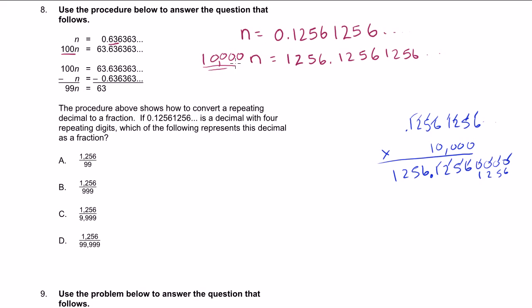So we say minus n, or you could say this is equal to minus 0.1256. And we are left with, on this side, what's 10,000 minus 1? Well, that's 9,999 is equal to, well, when you do the subtraction, this and this part are going to cancel out. The decimal parts cancel out, and you're just left with 1,256.